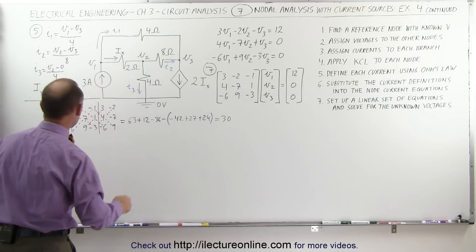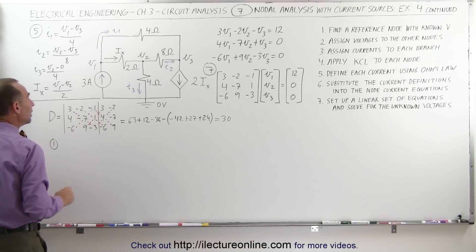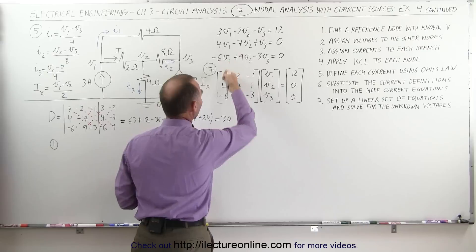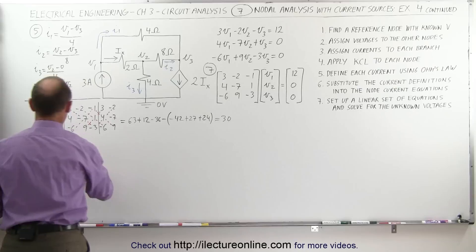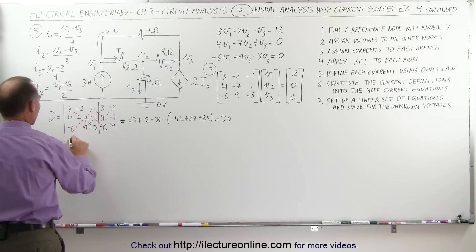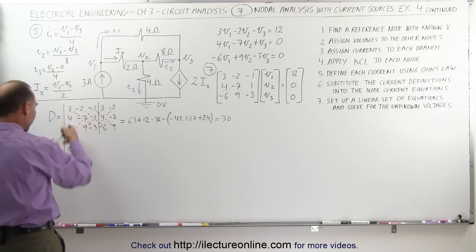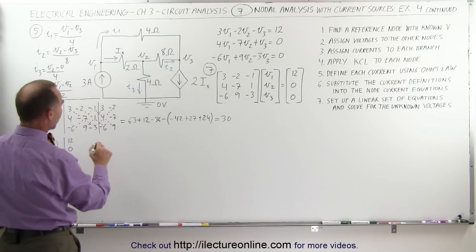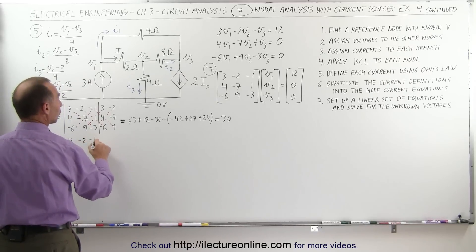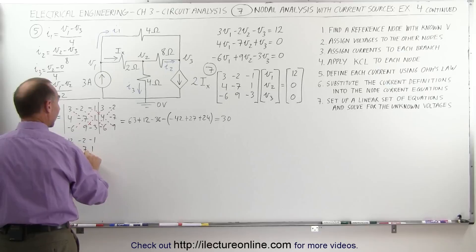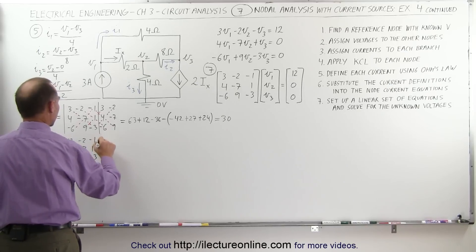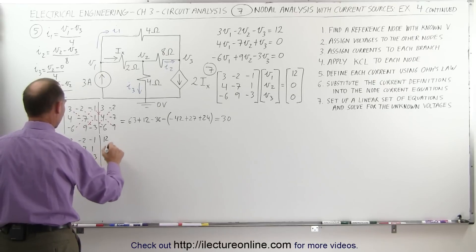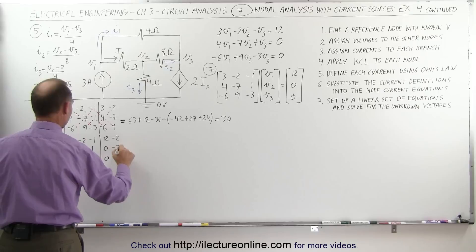Now we need three more matrices to find the three voltages. For V1, we replace the first column of the matrix with the constants: 12, 0, and 0. The other two columns remain the same: negative 2, negative 1, negative 7, 1, 9, and negative 3. We then append the first two columns again: 12, 0, 0, and negative 2, negative 7, and 9.